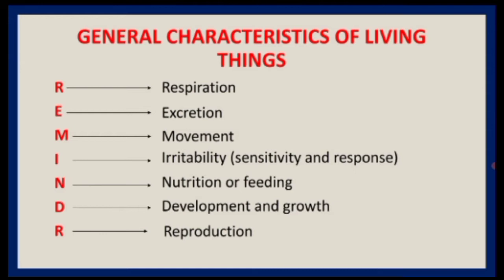Irritability means sensing changes in the environment — the stimuli — and responding to them. Living organisms are able to detect and react to changes around them. Plants react slowly to external stimuli such as light, heat, touch, and gravity. Animals react very quickly to external stimuli such as heat, light, touch, and gravity.